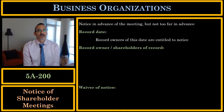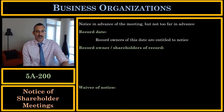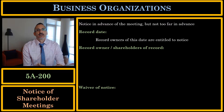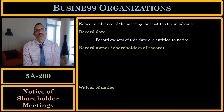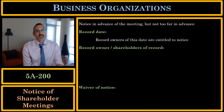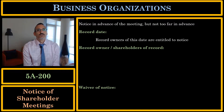If the record date is March 1st, the corporate secretary will look and see who the shareholders are as of March 1st, and those shareholders will receive notice of the shareholder meeting. If there is a transfer of shares after March 1st but before the shareholder meeting, that new shareholder is not entitled to notice. The shareholder of record as of the record date is entitled to notice and entitled to vote the shares, even though she has transferred the shares afterwards.